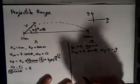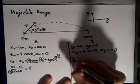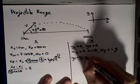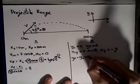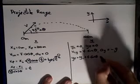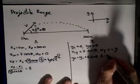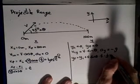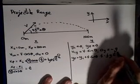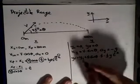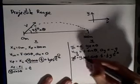The final relation tells us that y_final equals y_initial plus the initial y velocity — which is v times sine theta — times the time t, minus one-half g times t squared. Since y_final and y_initial are both 0, that makes this a little easier to solve.